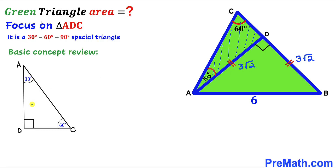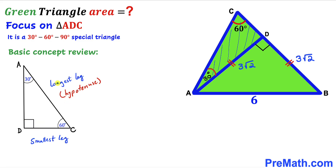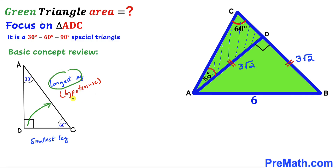Let's review the 30-60-90 triangle concept. The side opposite the smallest angle (30°) is the smallest leg, and the side opposite the largest angle (90°) is the hypotenuse. In a 30-60-90 triangle, the hypotenuse is always twice the smallest leg. If the smallest leg is 1, the hypotenuse is 2 and the third leg is √3.